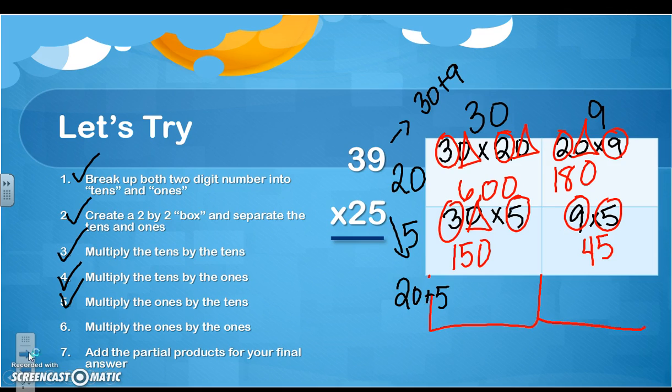Now typically what I encourage you to do is just to add these two rows and then add these partial products together. So if I have 180 plus 45, I have 225. If I have 600 plus 150, I have 750. So 750 plus 225 is 975. So 975 is my final answer.